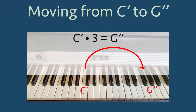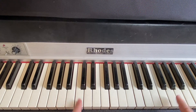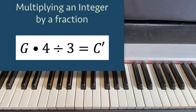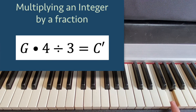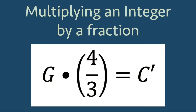G double prime is equal to C prime times three, which we can then also rewrite as G double prime divided by three is C prime. What we've just discovered is that if we start at the note G, multiply by four, and then divide by three, we end up at the note C prime. And again, using what we've learned before, this means that G times the fraction four thirds is the note C prime.